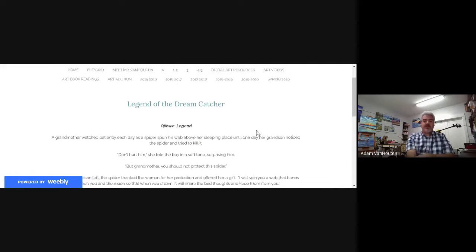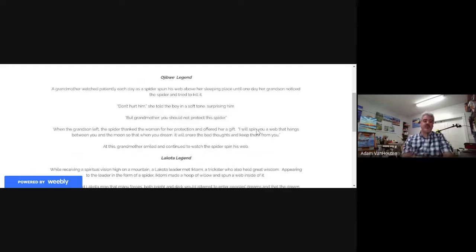Okay, so these are a couple of legends of the dream catcher and the first legend is an Ojibwa legend. Ojibwa is a tribe and we're going to read about this legend. A grandmother watched patiently each day as a spider spun his web above her sleeping place until one day her grandson noticed the spider and tried to kill it. Don't hurt him, she told the boy in a soft tone, surprising him. But grandmother, you should not protect the spider. When the grandson left, the spider thanked the woman for her protection and offered her a gift.